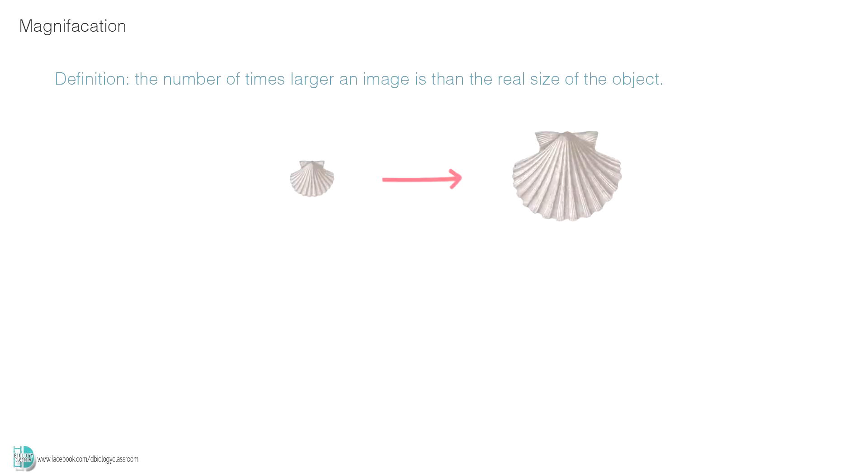Magnification is the number of times larger an image is than the real size of the object. In other words, it is a measurement of how much an object is enlarged in the image. The magnification is calculated by observed size of the image divided by the actual size. Let's use a few examples to understand this.